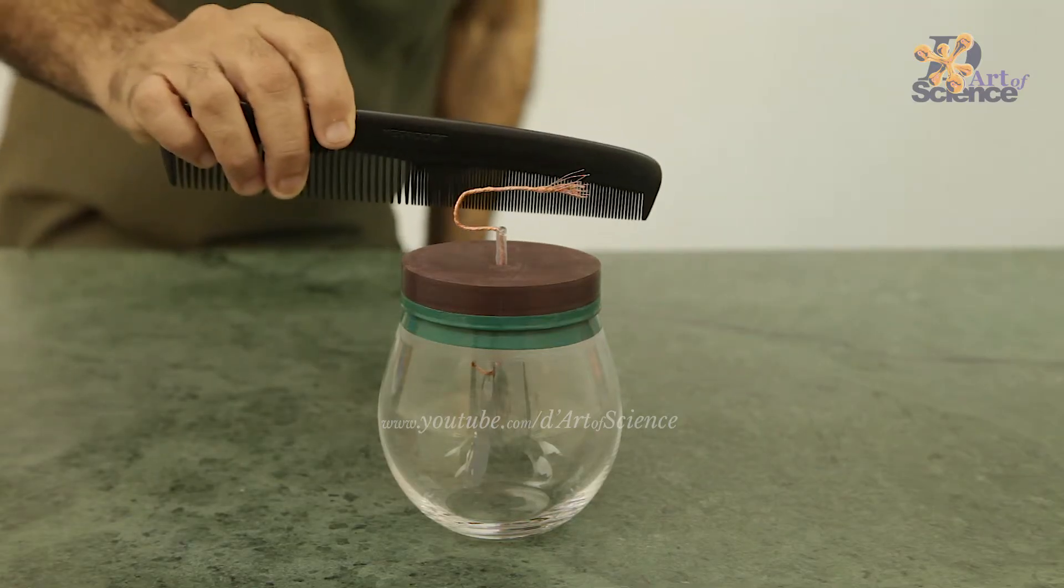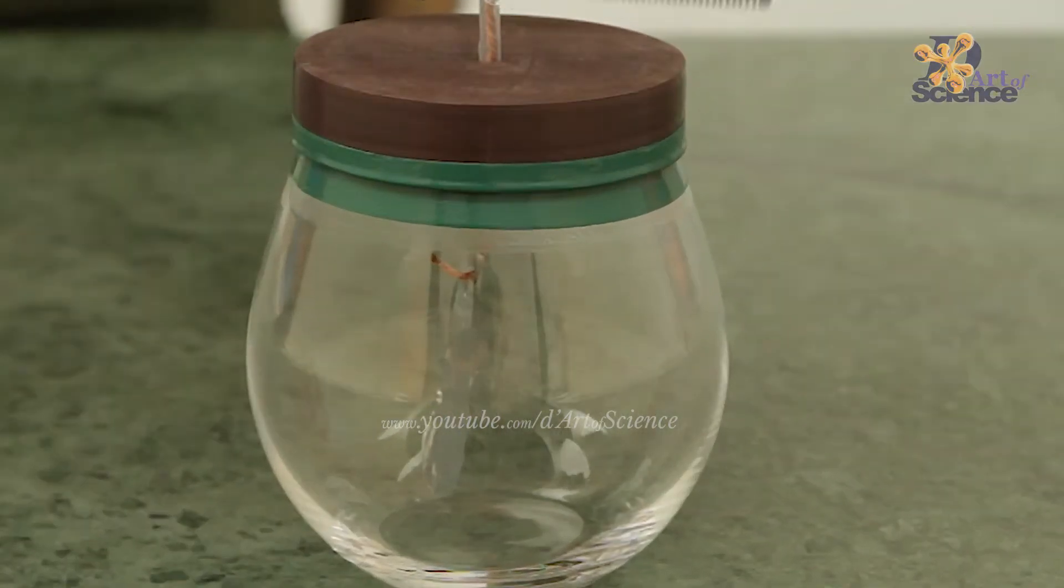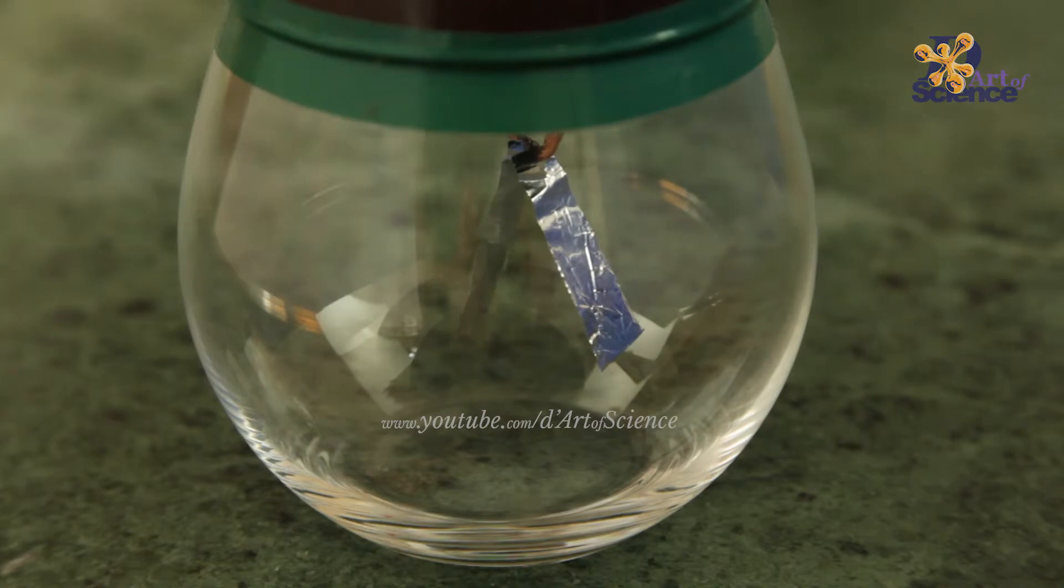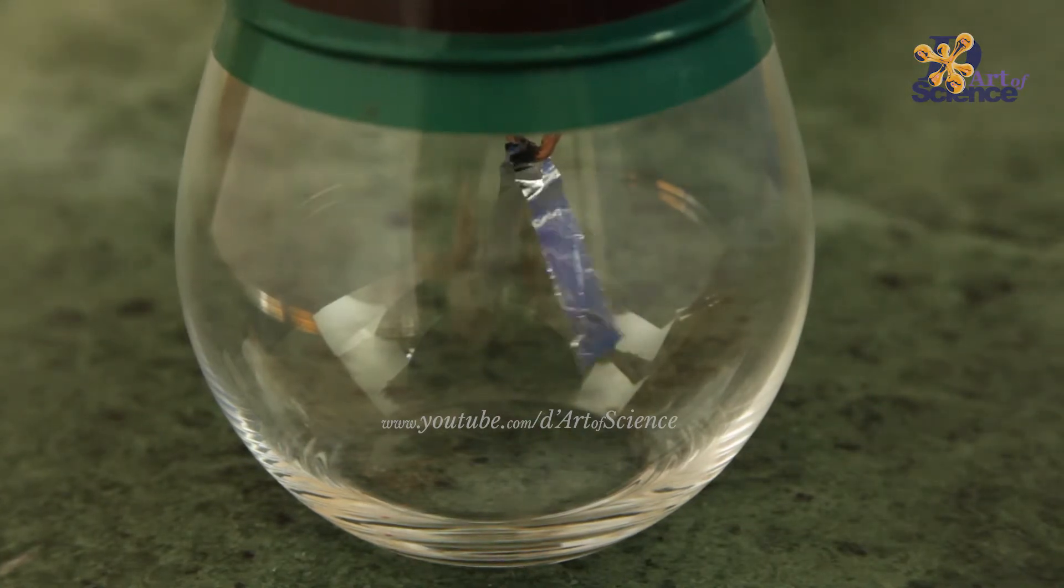If we touch the copper wire with a plastic comb, then both aluminum leaves get a negative charge, so once again they repel each other. This is the same reason why you can see that your hair sometimes stands when you take off woolen clothes from your body.